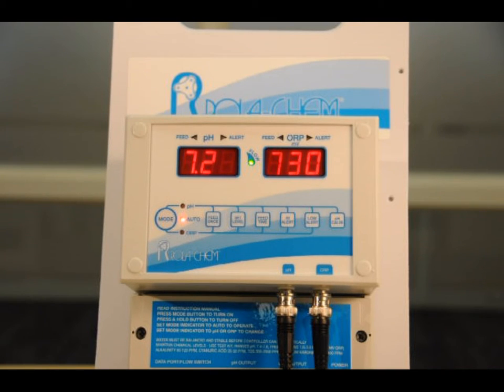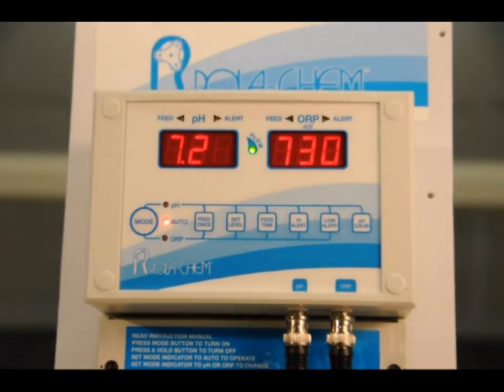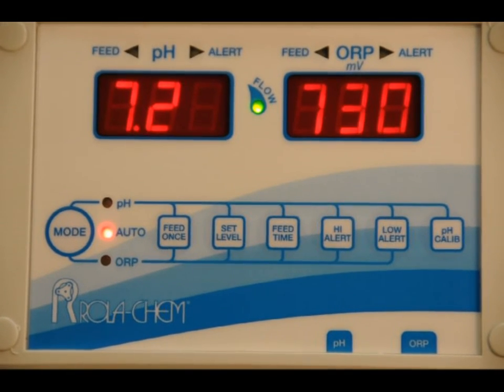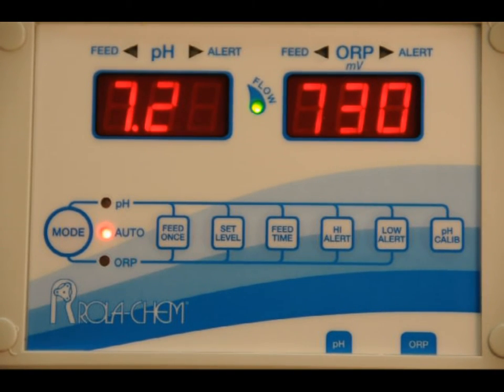A lot of times you'd calibrate if the pH probe is starting to go bad. The best way to do it is to test the pool or spa, verify what the true pH reading is, and if you wanted to adjust it you could adjust it to match the pool or spa.